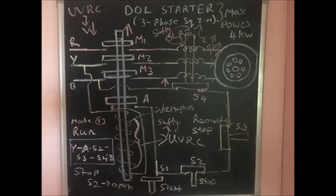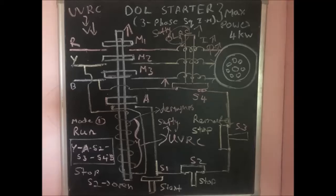Under-voltage protection also operates when the voltage is less than 300 or 200 volts. The magnetic power of the under-voltage coil decreases, because MMF equals N times I — if voltage decreases, current decreases, and magnetic flux decreases. Therefore M1, M2, M3 and the conductor go down due to gravitational force, disconnecting the motor.